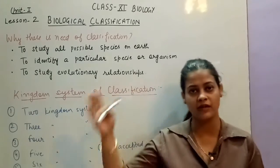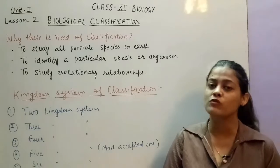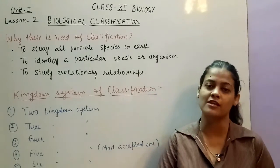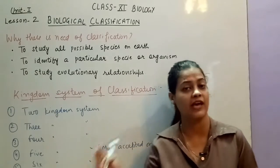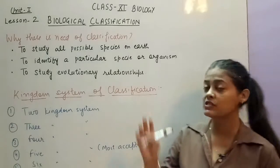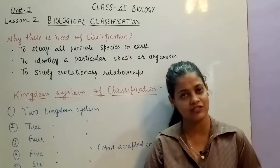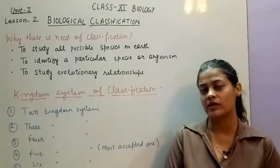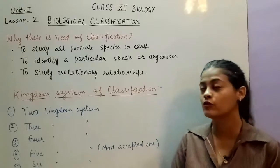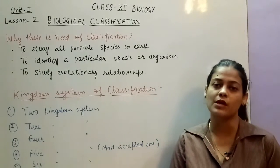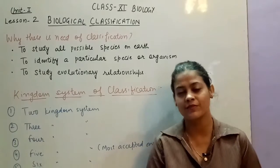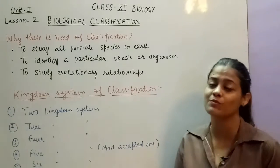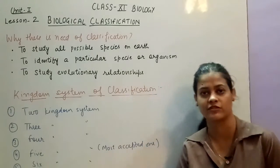As you studied in ninth class, you will remember that we studied particular kingdoms in a particular sequence. Why did we study in that sequence? Because there is an evolutionary relationship between these organisms. First of all, we study Monera and then Animalia — we study Monera and prokaryotes first. That is why we study evolution. So classification helps us study the evolutionary relationship between organisms. These are the three most important points of why we need classification.